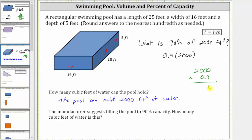So we have 9 times 0, which is 0. 9 times 0, which is 0. 9 times 0, which is 0, and then finally 9 times 2, which is 18. This product must contain one decimal place, and therefore the product of 2,000 and 0.9 is 1,800.